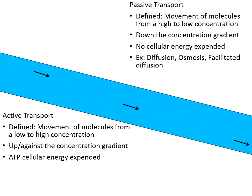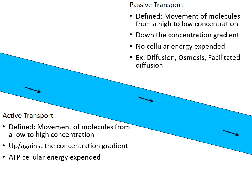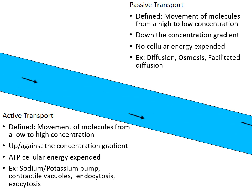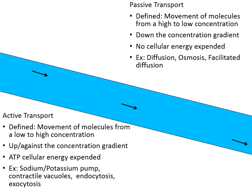Some examples of each: diffusion, osmosis, and facilitated diffusion are examples of passive transport. And in active transport: the sodium-potassium pump, contractile vacuoles, endocytosis, and exocytosis. We're going to talk about each as we go through this.